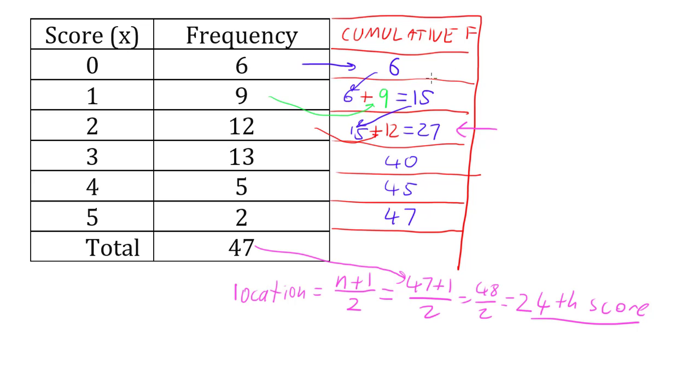And the reason being is that this says that numbers one through six are zeros, numbers seven through fifteen are ones, and all the way up to twenty-seven are twos. So if I'm looking for the twenty-fourth score then that must be somewhere within the twos.